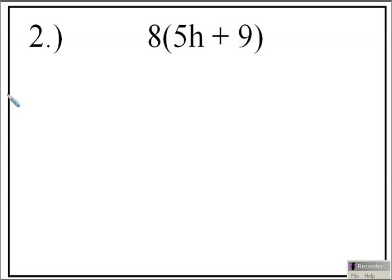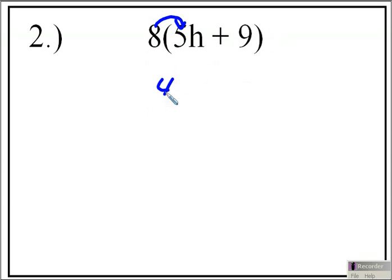On problem number 2, we have 8 times, in parentheses, 5H plus 9. What we're going to do is distribute the 8 to the 5H. So we're going to multiply 8 times 5H, and that's going to give us 40H.